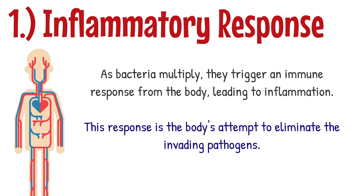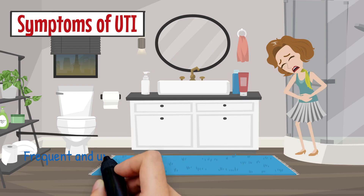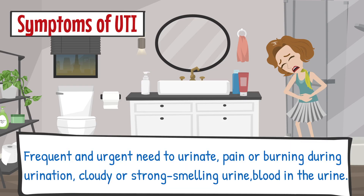The symptoms of urinary tract infections are due to the inflammation and irritation caused by the infection. It results in symptoms like frequent and urgent need to urinate, pain or burning during urination, cloudy or strong smelling urine, and in some cases there can be blood in the urine.